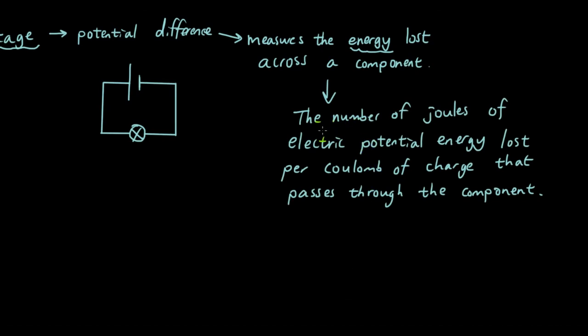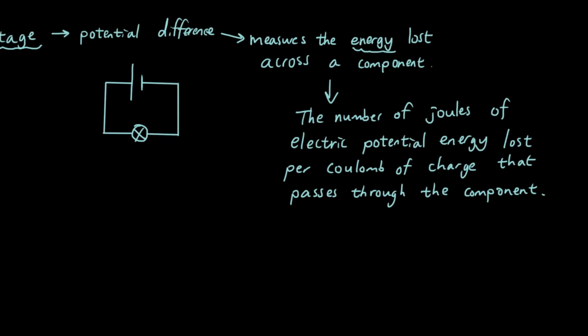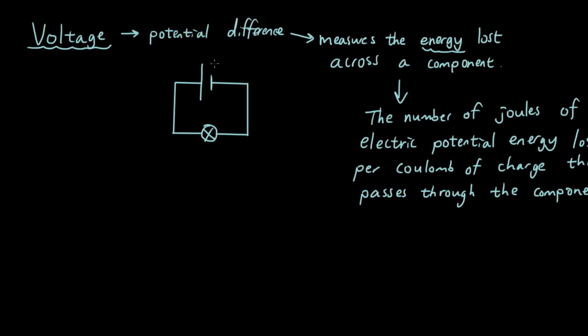The energy lost is measured in the number of joules of electric potential energy lost per coulomb of charge that passes through the component. So if you guys imagine in this particular circuit, there are all of these electrons coming out of the negative terminal, all of these electrons coming out of it, moving in this direction.